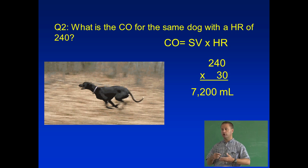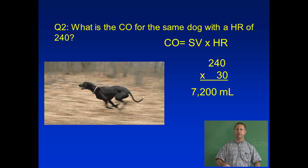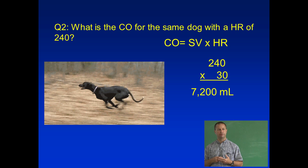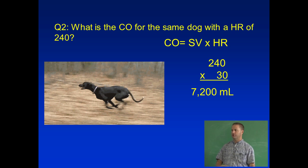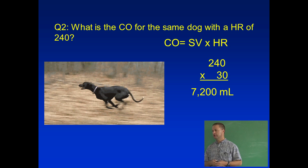We call this ability of the heart and cardiovascular system to pump so much more blood during exercise the cardiac reserve. Cardiac reserve is your ability to pump more blood during times of stress. For humans we can do it by a factor of four or five, and well-conditioned dogs can go beyond that. Geriatric animals have a lower cardiac reserve — they get winded walking to the mailbox.